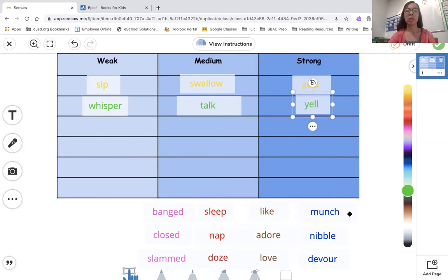And now when you're eating, you can think about these words: munch, nibble, and devour. Which one of those is weak, medium, and strong?